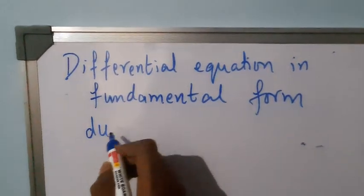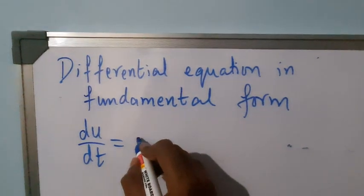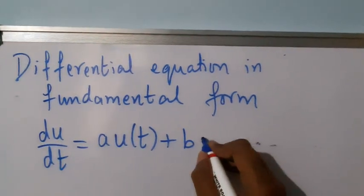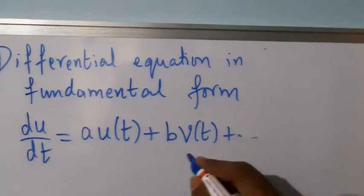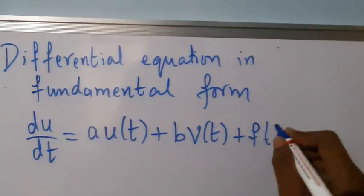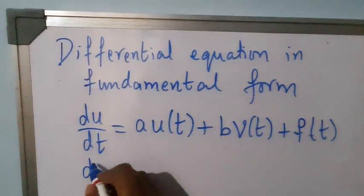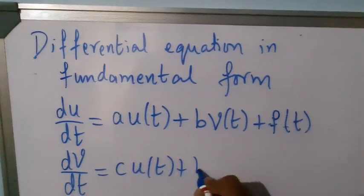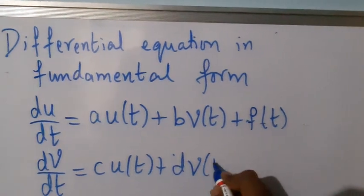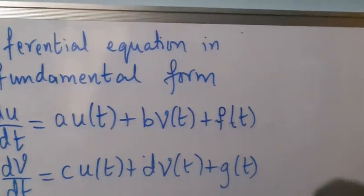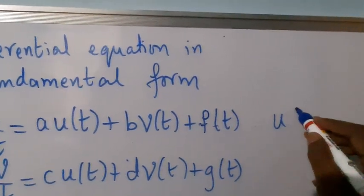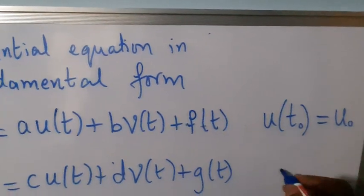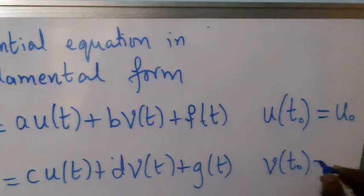So if we have a system of equations — I consider only a 2×2 system; the same thing can be extended to higher order systems. We have du/dt equal to au(t) plus bv(t) plus f(t), and similarly dv/dt equal to cu(t) plus dv(t) plus g(t). We have the initial value problem: u(t₀) = u₀ and v(t₀) = v₀.